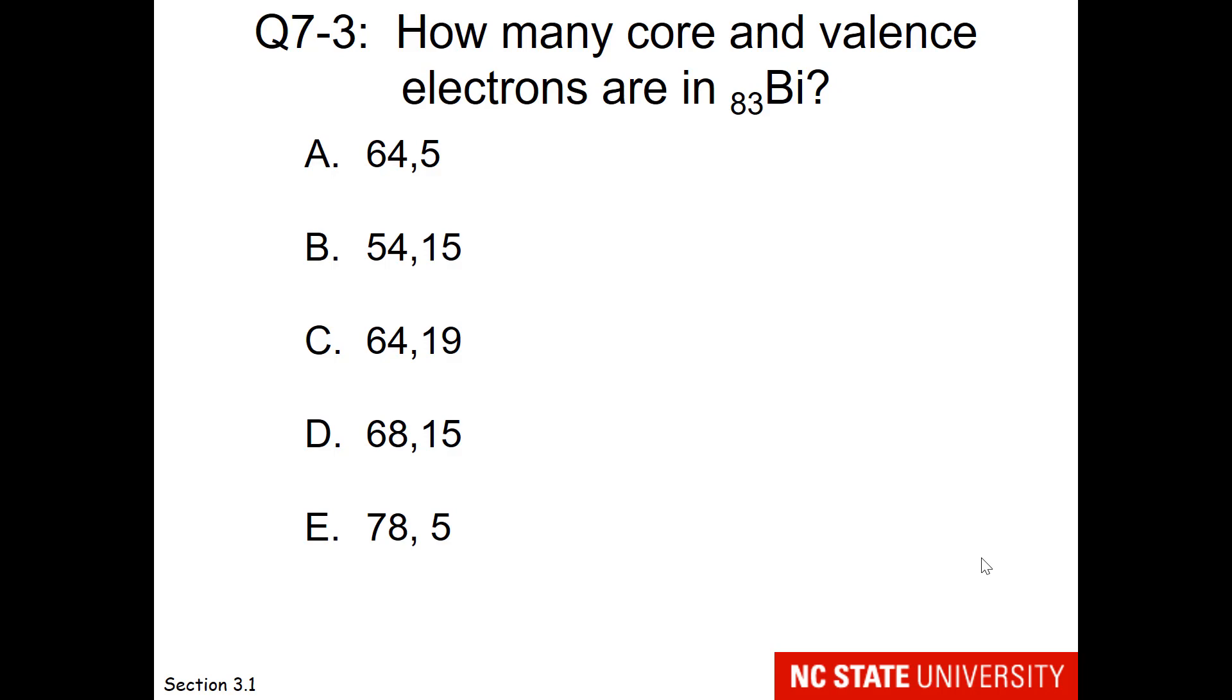This question asks, how many core and valence electrons are in a bismuth atom, which is neutral? Now certainly you can count these up, but remember that your electrons need to add up to the number of protons when we speak of a neutral atom. So there would be a sum of 83 electrons. I believe it's easiest to find bismuth on the periodic table, find the number of valence electrons, and then take 83 minus the valence to give yourself the core electrons.